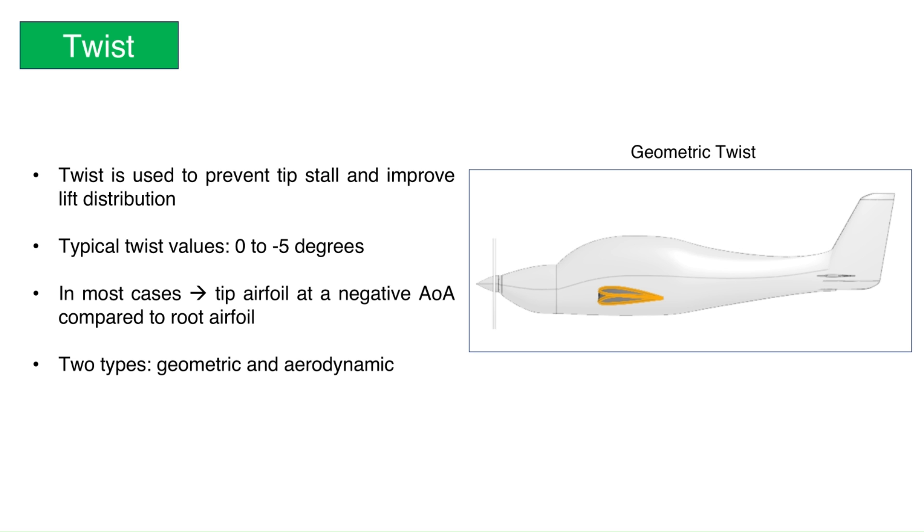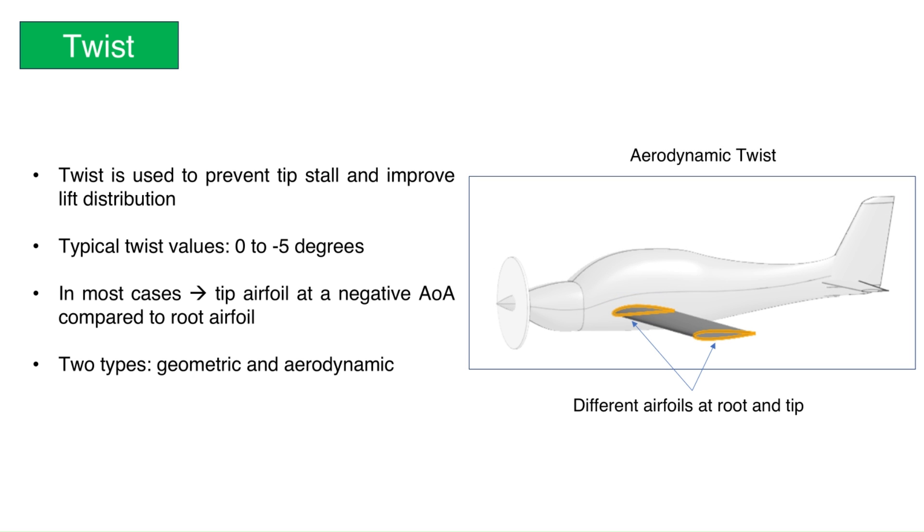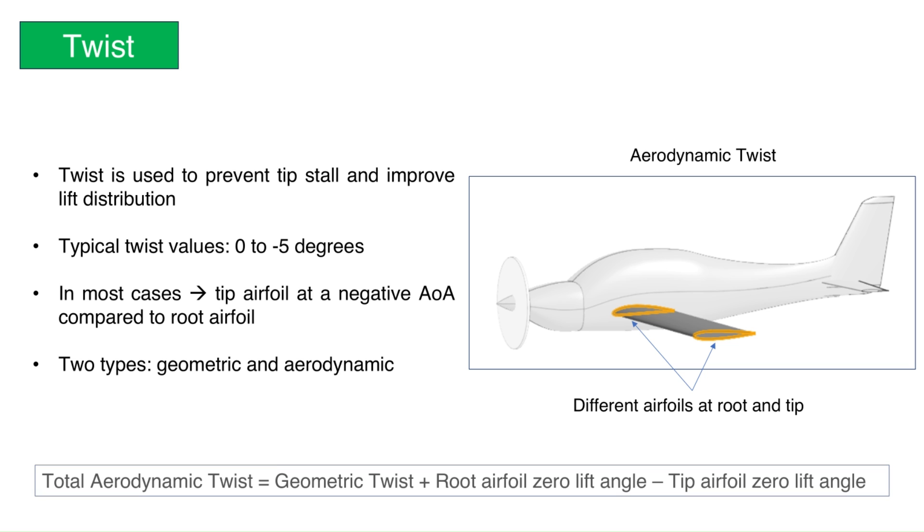Aerodynamic twist is defined as the angle between the zero-lift angle of an airfoil with respect to the zero-lift angle of the root airfoil. If identical airfoils are used, then aerodynamic twist is equal to the geometric twist. On the other hand, a wing with no geometric twist can have aerodynamic twist if, for example, the root airfoil is cambered, but the tip airfoil is symmetric.